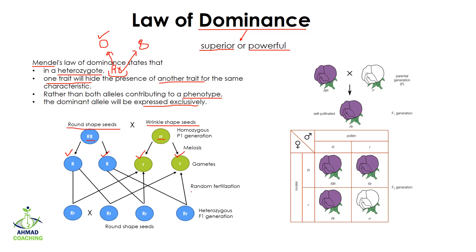The gametes fuse randomly during fertilization. Capital R fuses with small r, giving a heterozygote; similarly other combinations also produce heterozygotes. As you can see, all these seeds have capital R, which means all these seeds are going to be round in shape, confirming that round is a dominant trait.